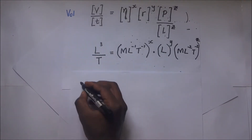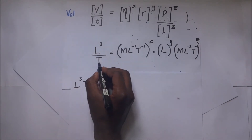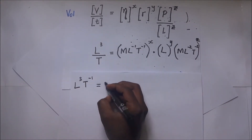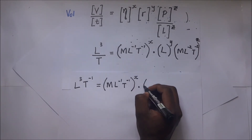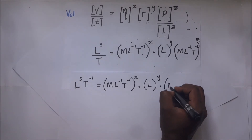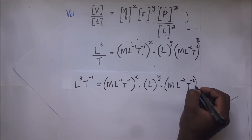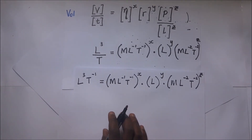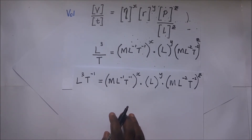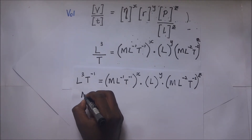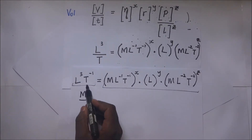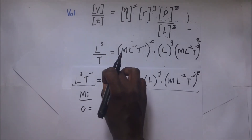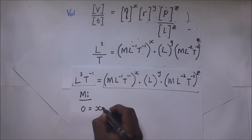Bringing everything together, we have L³·T⁻¹ equal to M·L⁻¹·T⁻¹ to the power x, times L to the power y, times M·L⁻²·T⁻² to the power z. Comparing powers of M: on the left side there is nothing, so 0 equals x plus z. That is equation 1.